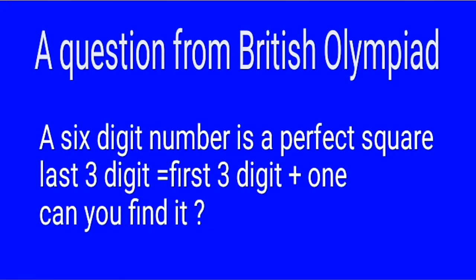A six-digit number is a perfect square. The last three digits are equal to the first three digits plus one. Can you find it? It actually has many answers, but we will provide one answer. Try it yourself first, then look at the solution.